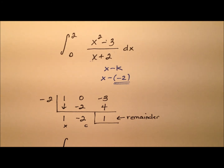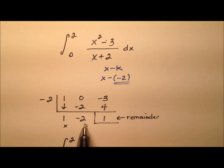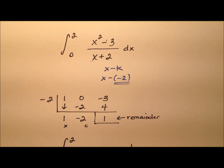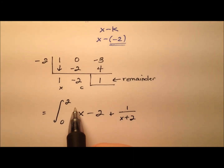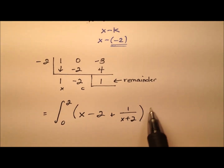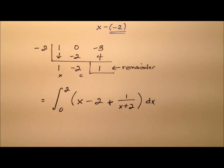So we still have our integral from 0 to 2, and the integrand can now be rewritten as x minus 2, plus 1 over x plus 2, all with respect to x.